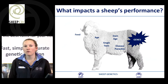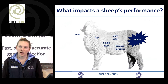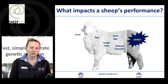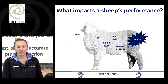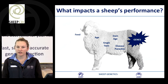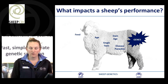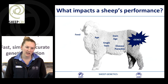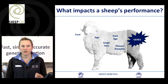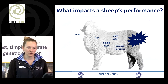If we think about what impacts an animal's performance, we know there are a number of things that will affect how an animal performs: feed, age, whether it's a single or a twin, damage, whether it is immunocompromised, and also its genetic performance, which will impact its overall performance.